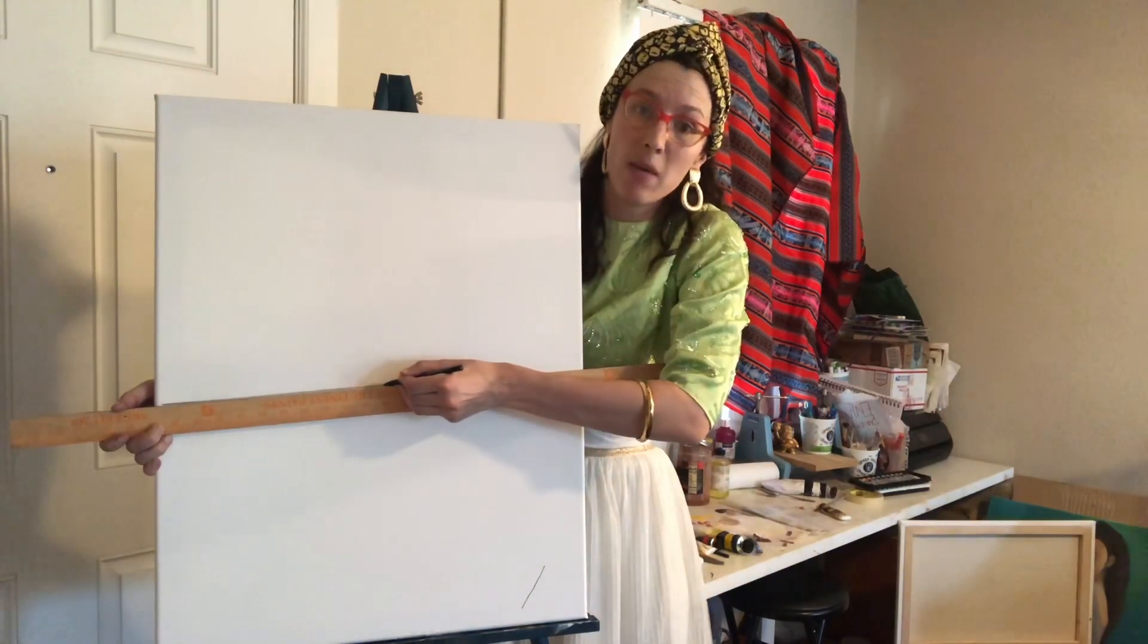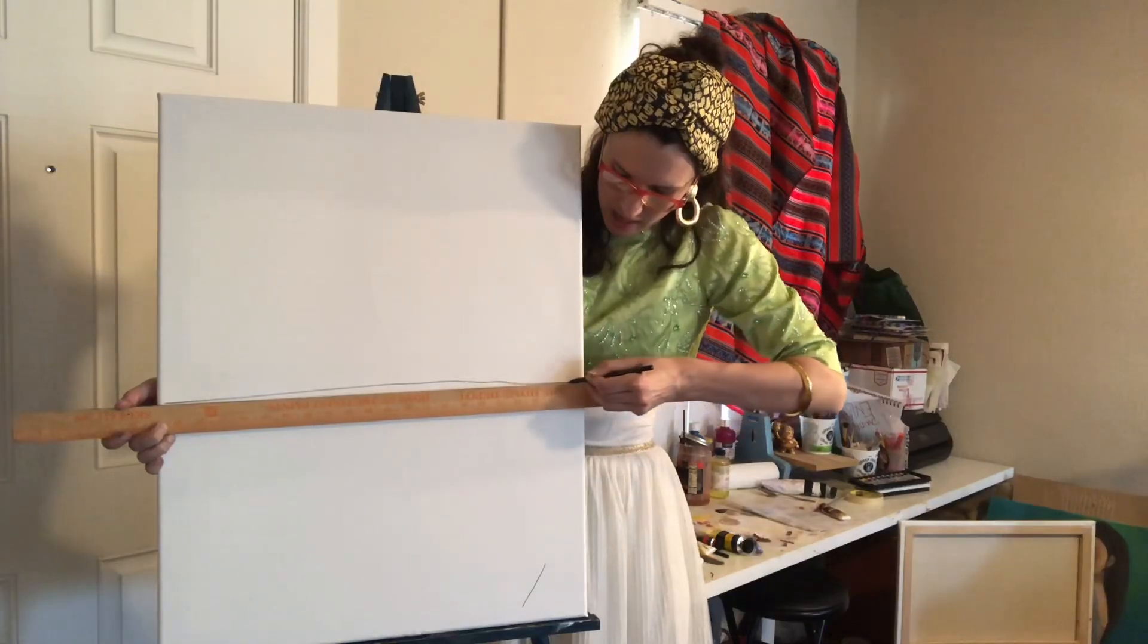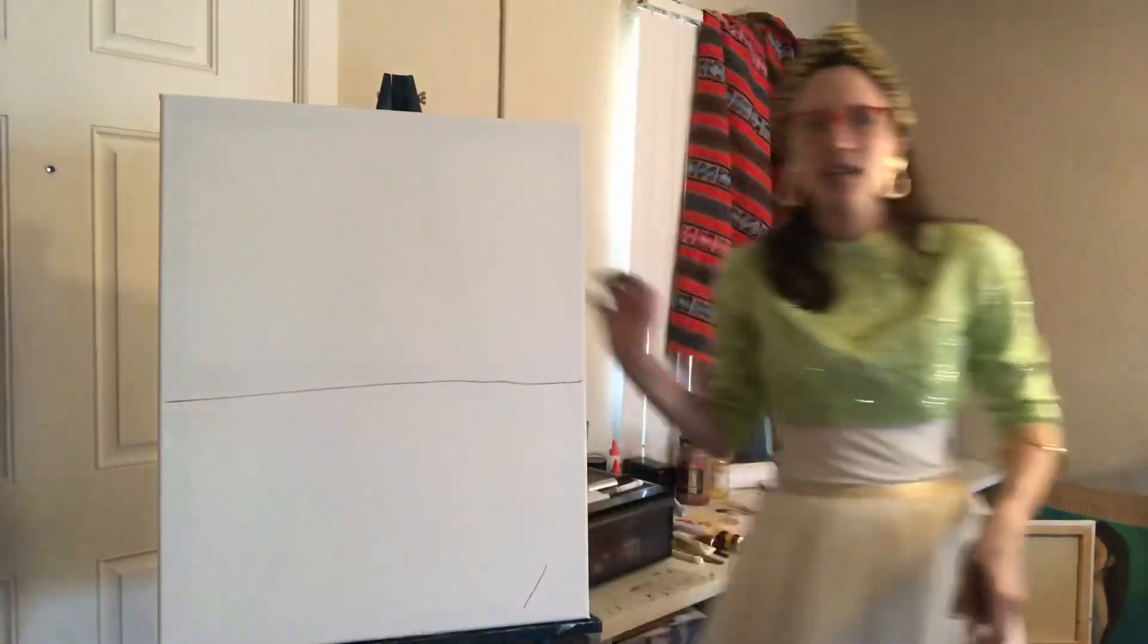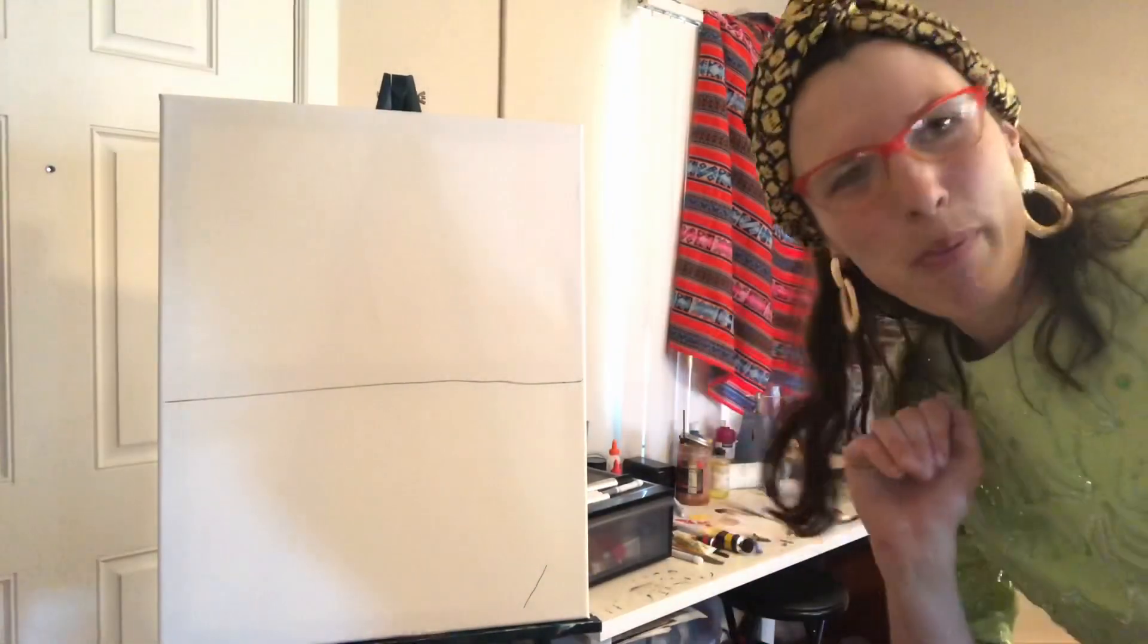Now, don't draw too heavy because we will be erasing some of this stuff later. So there is my horizon line. Ms. Coker got it a little wonky in some spots, but that's okay. No problem.